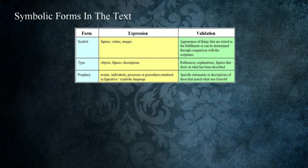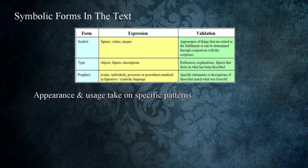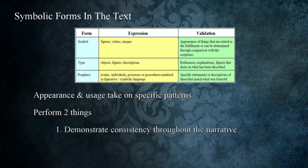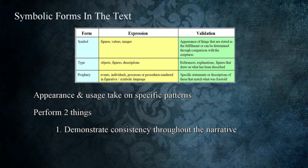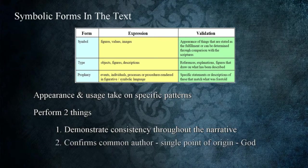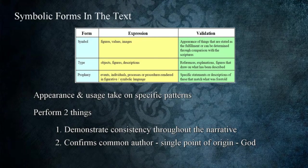Representational forms — including figurative, prophetic, and symbolic elements — are employed in a number of ways. Their appearance and usage take on specific patterns in the text. These patterns and functions they perform accomplish two things. First, they demonstrate consistency throughout the narrative, showing the stability of the biblical text. Skeptics, not understanding things stated in the Bible, dismiss the scriptures as nonsense or as subjective expressions reflecting ideas from the author's culture of origin. The consistency of these, however, leads to the second thing accomplished by them: the confirmation of authorship. Although human agents were used to record the word, it originated with God. The similarity of expression and consistent manner in which symbolic elements appear direct us to a single point of origin — God.